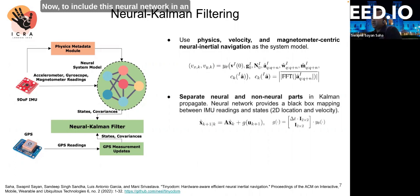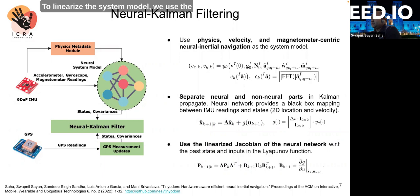Now, to include this neural network in an extended Kalman filter formulation, we separate the neural and non-neural components in the Kalman propagation. This results in a neural network providing a non-linear black-box mapping between IMU readings and states. To linearize the system model, we use the Jacobian of the neural network with respect to the past states and current inputs to estimate the process covariance. The GNSS then provides measurement updates during Kalman update steps.